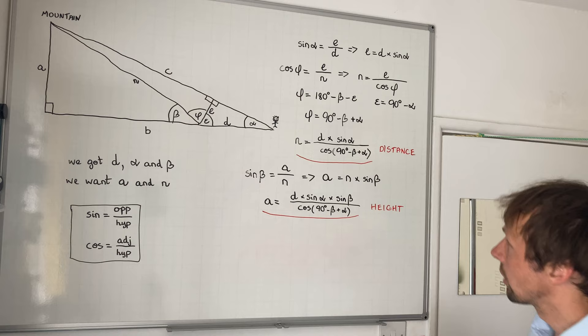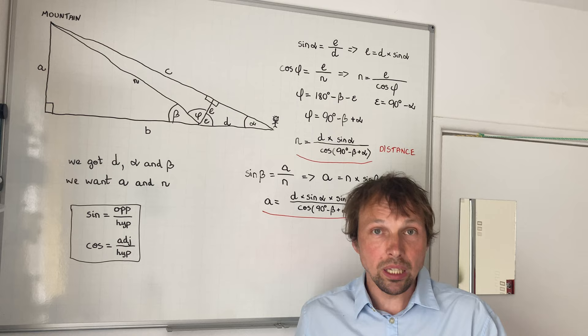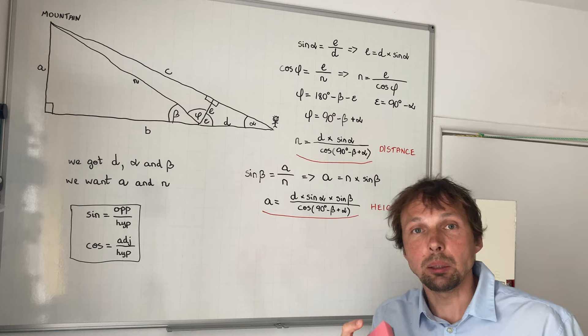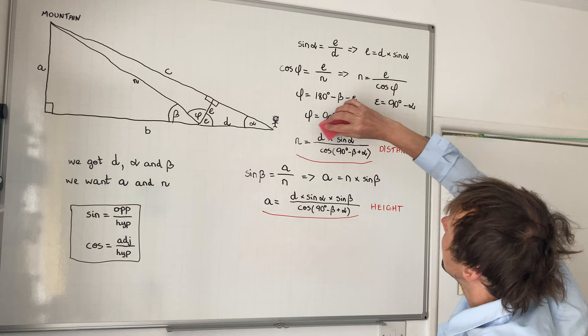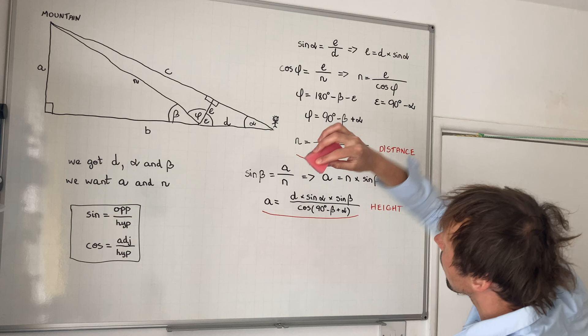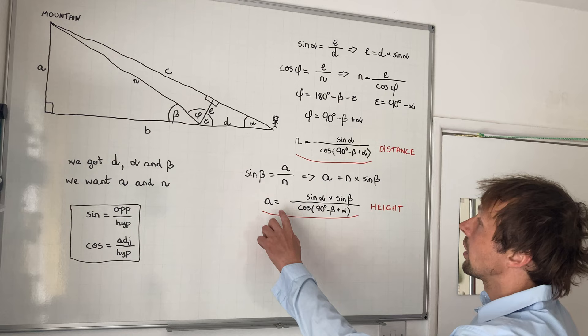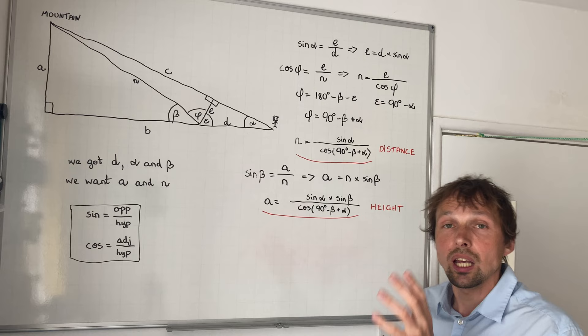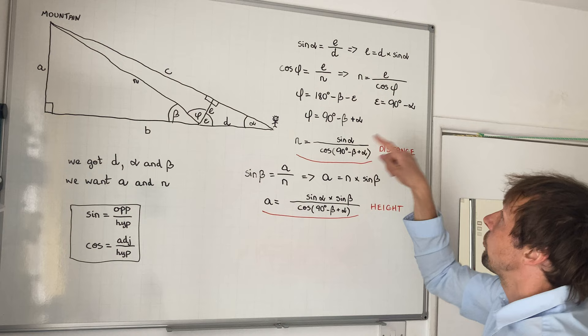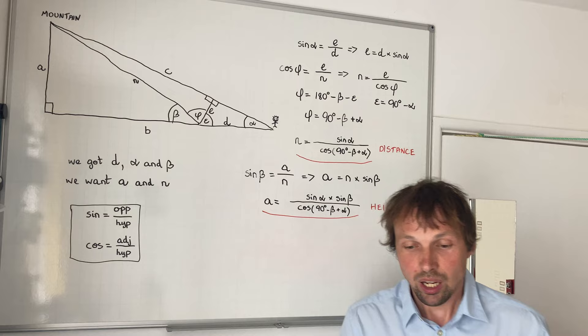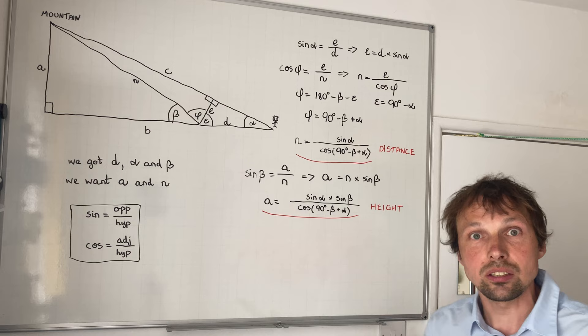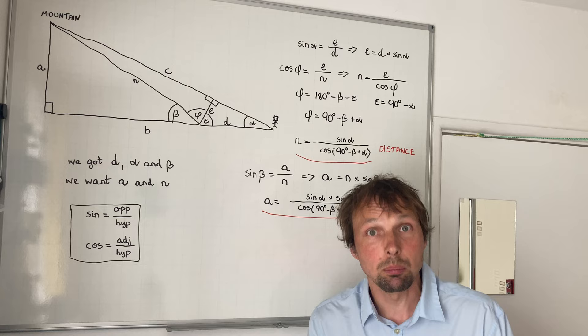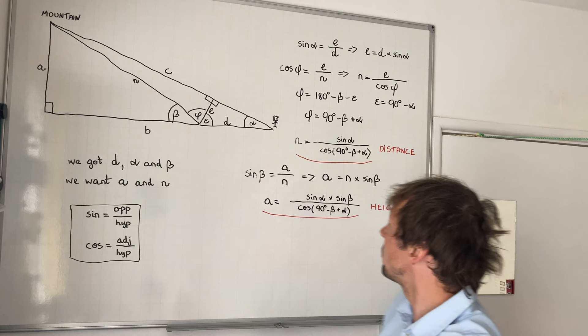If we use one meter for d, we can actually remove d from both formulas — multiplying by one changes nothing. So if d is exactly one meter, the formula simplifies: just remember it's valid only when d equals one meter, and the result will be in meters. We take one big step, measure angles alpha and beta with a precise device, and we get both the distance and height of the mountain. It really is that simple.